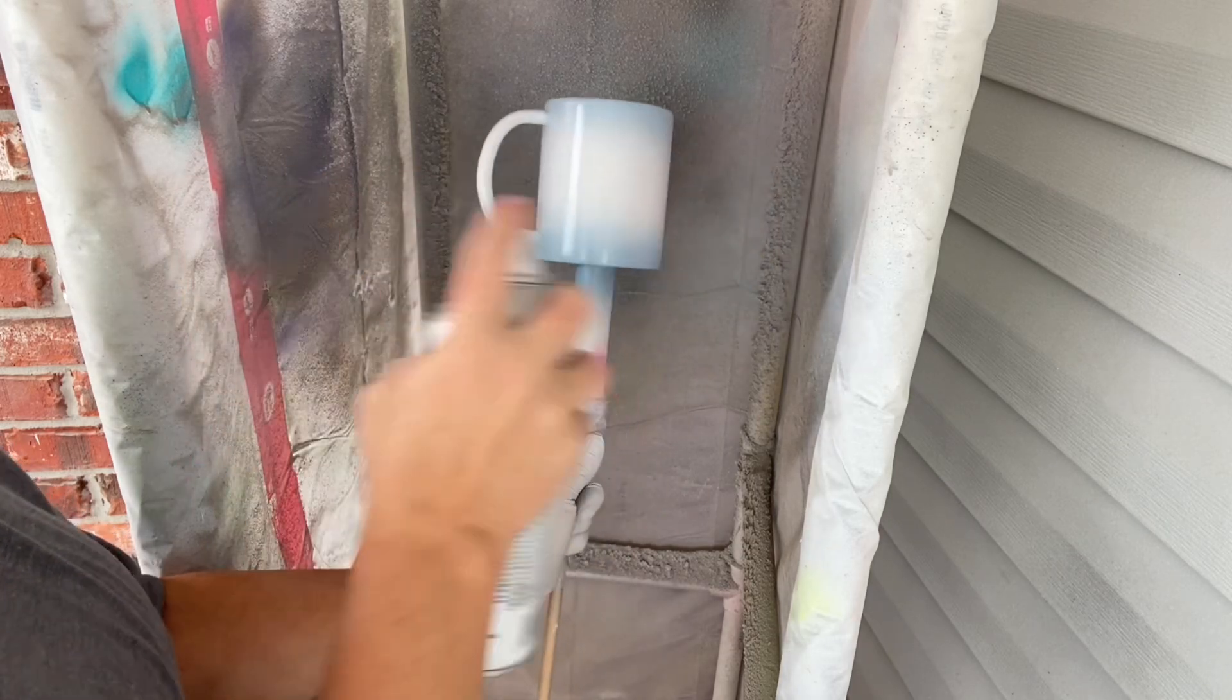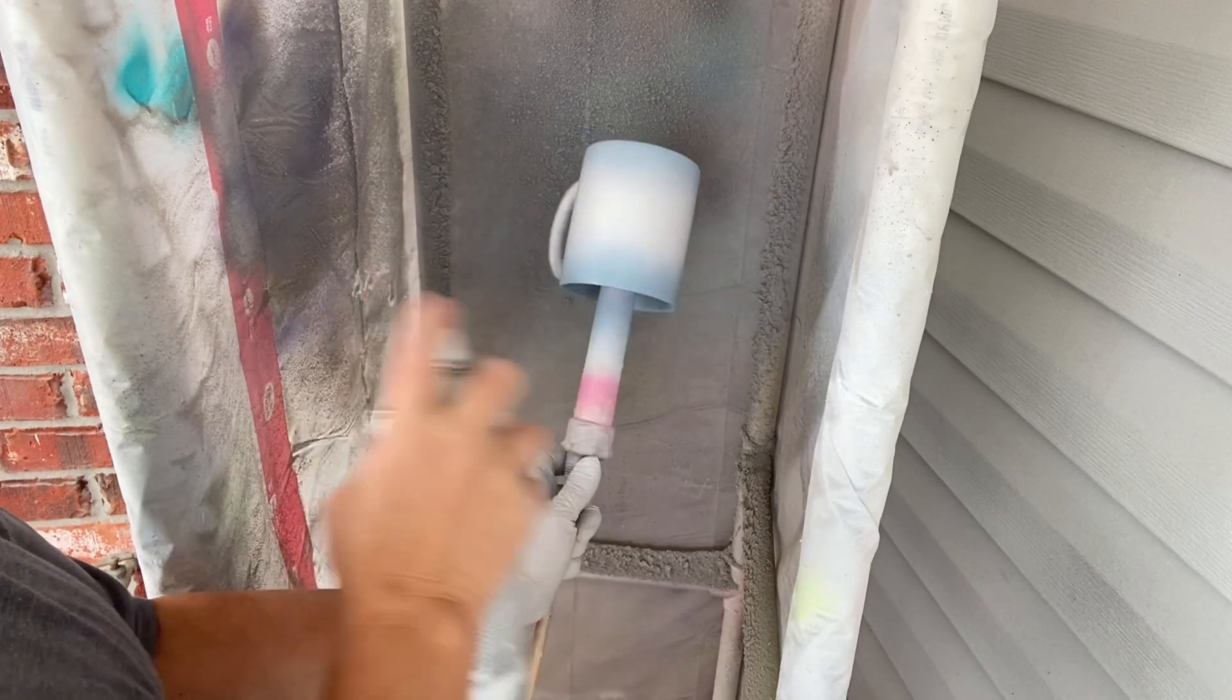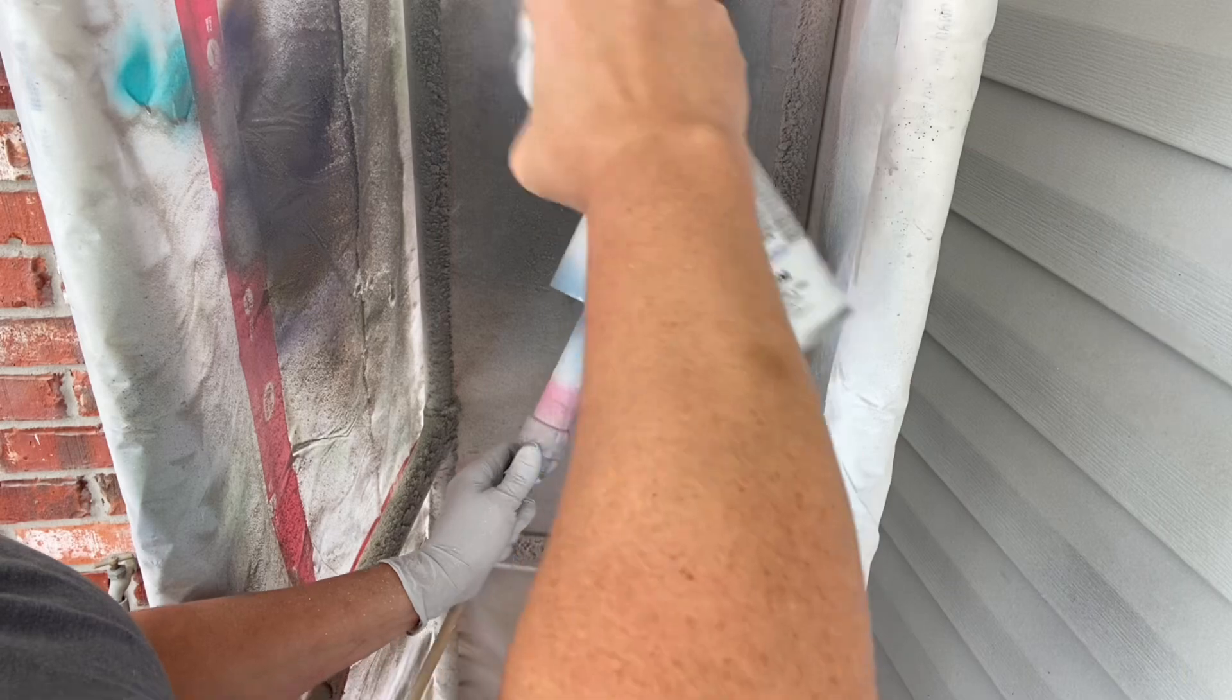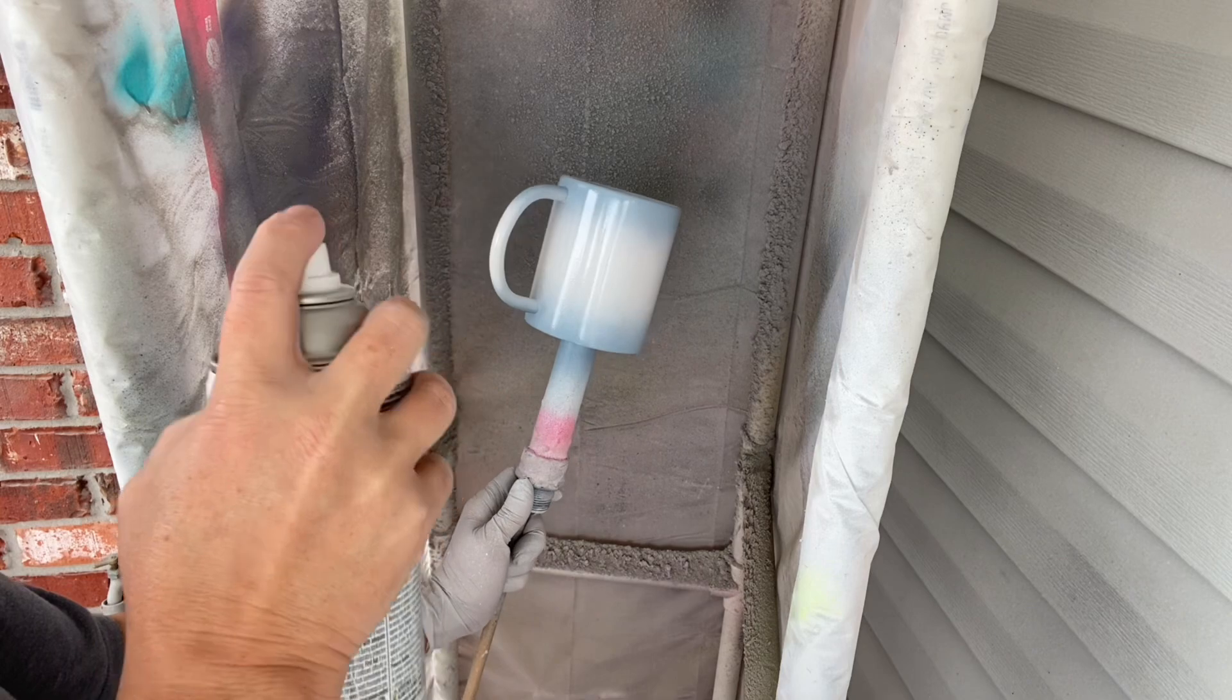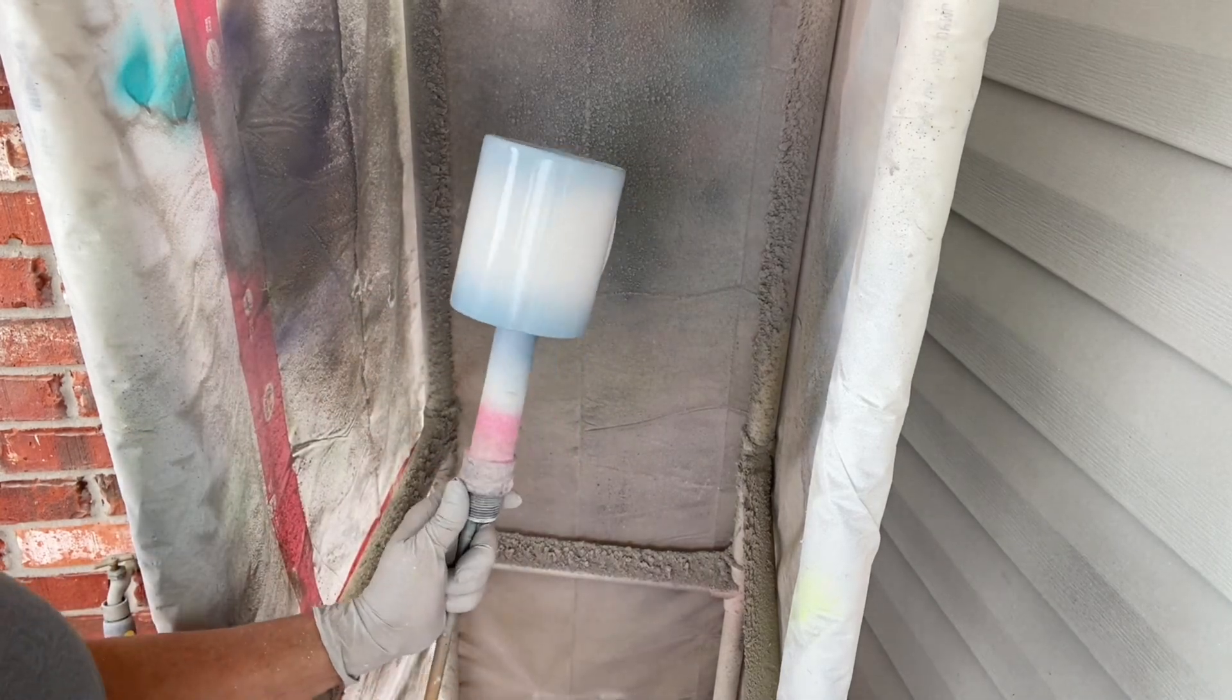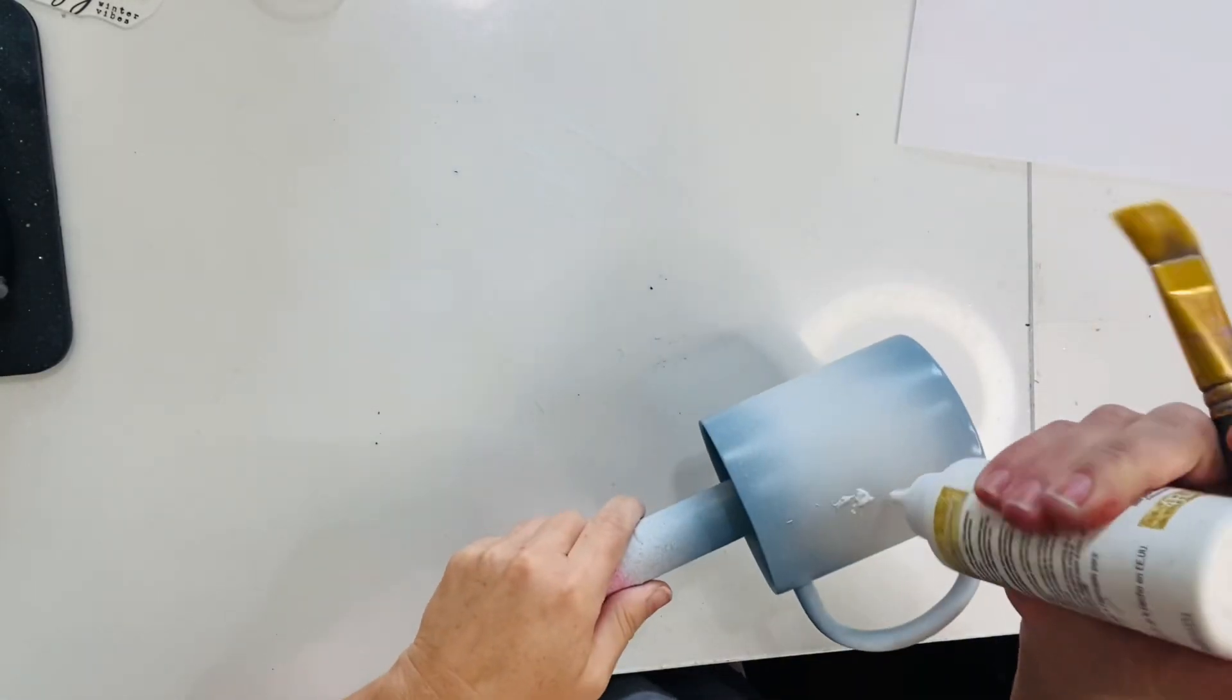And then once that dries, we're going to go in with this dusty blue. We're going to do this just at the top and bottom and let the overspray do the ombre. Once that part dries, go in with your white again and brighten up the middle. You're just going straight across. Super simple. Again, light. We don't want drips just to give a little brightness to that middle part.